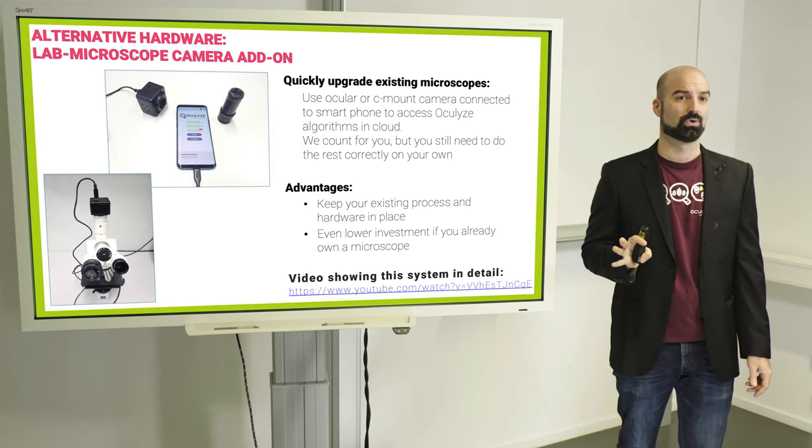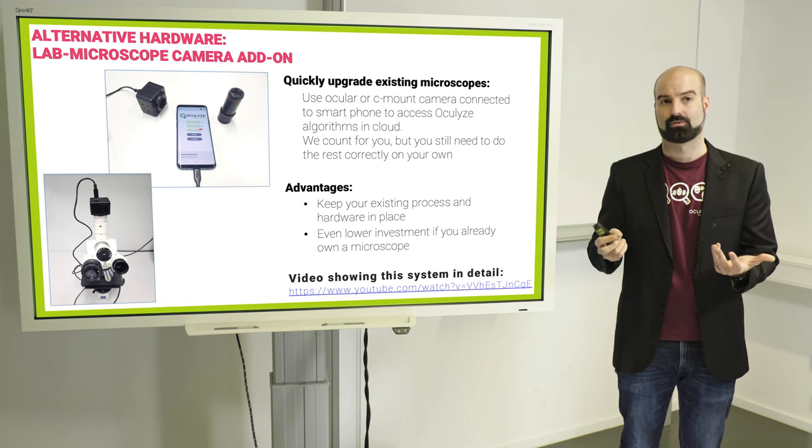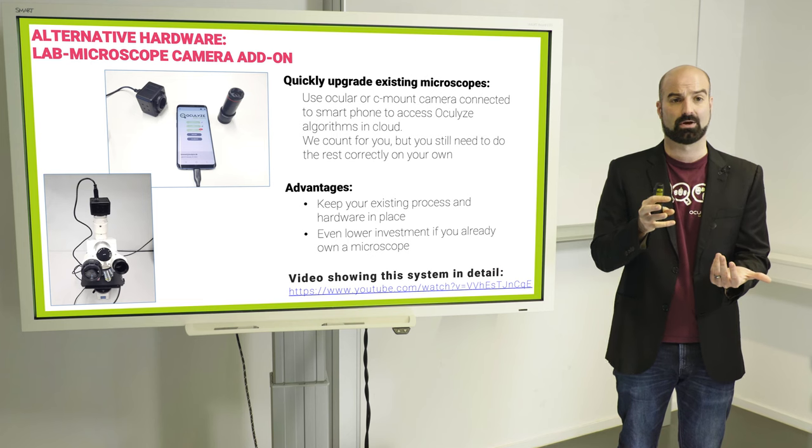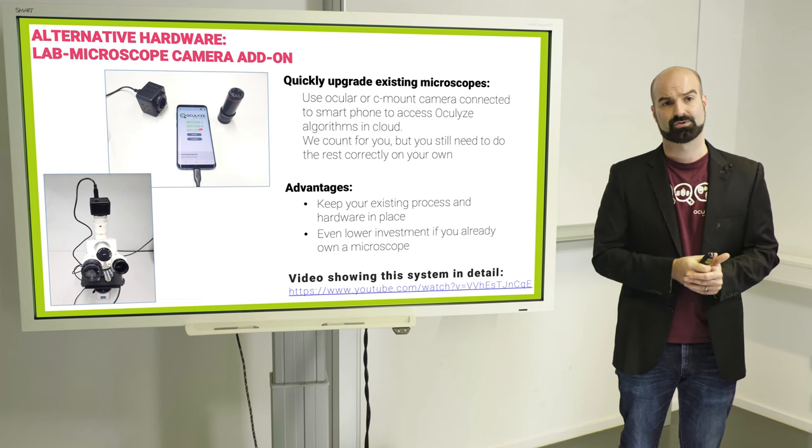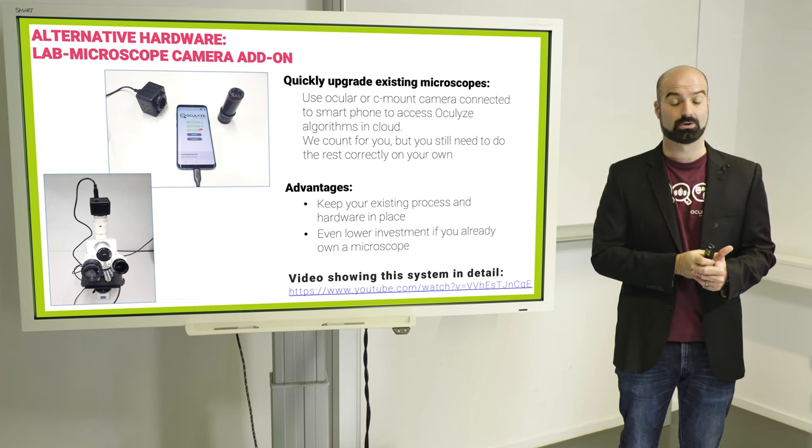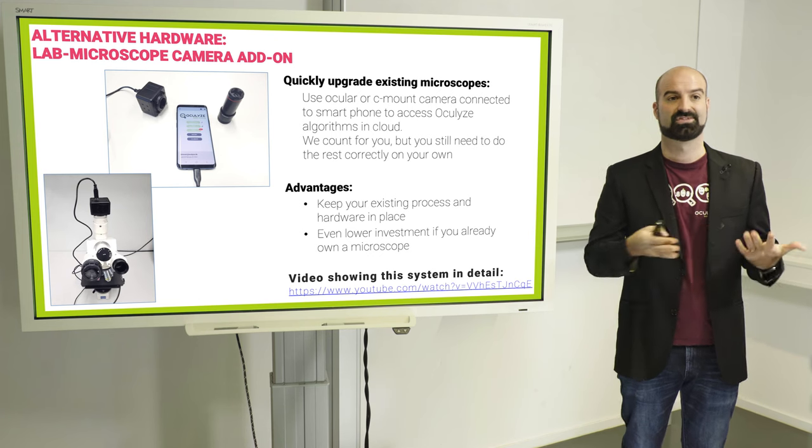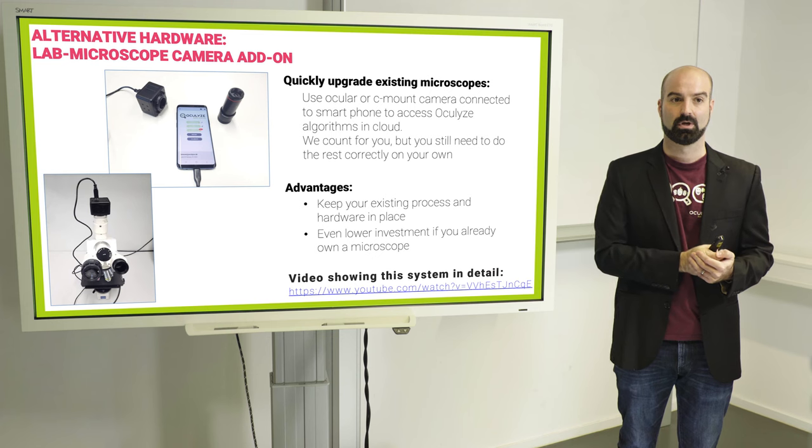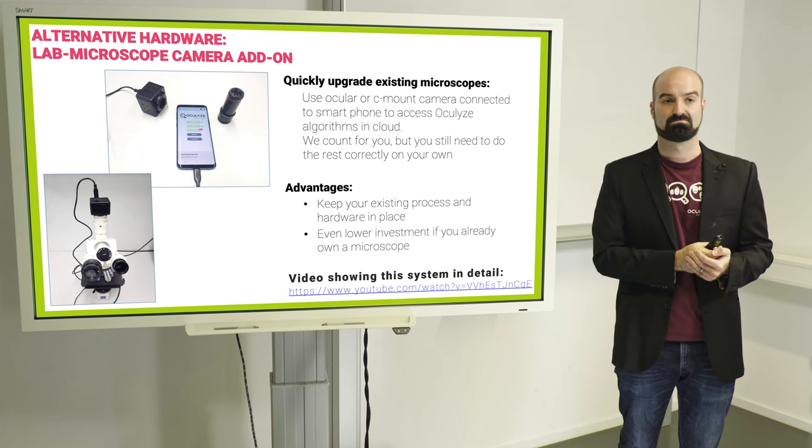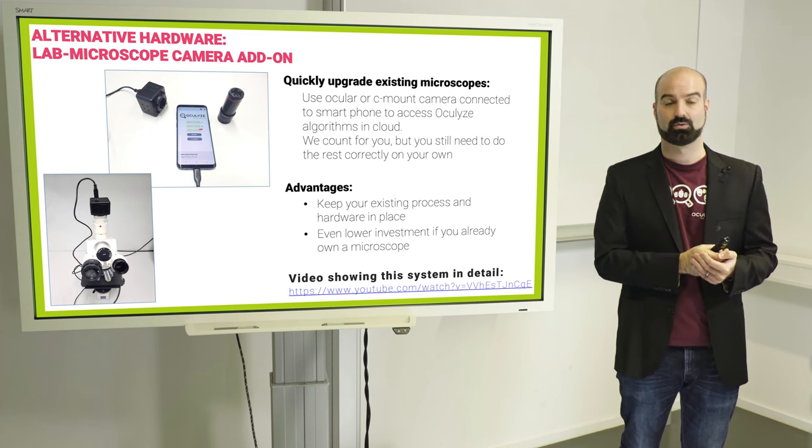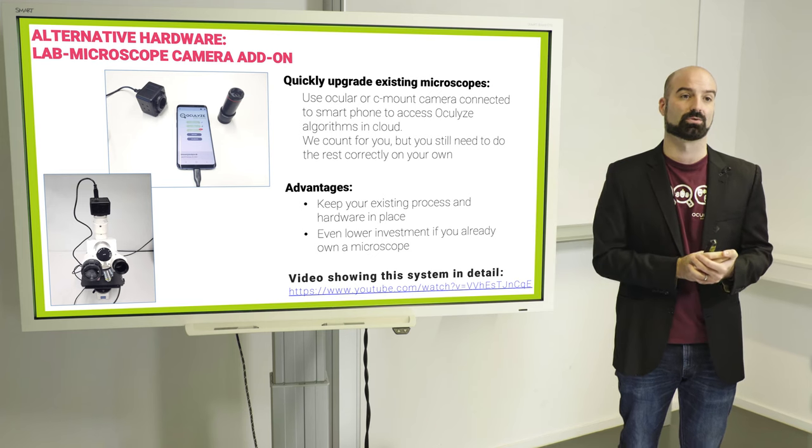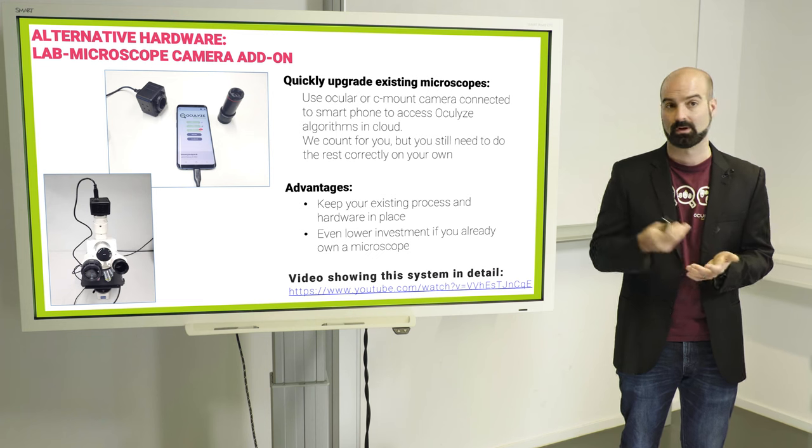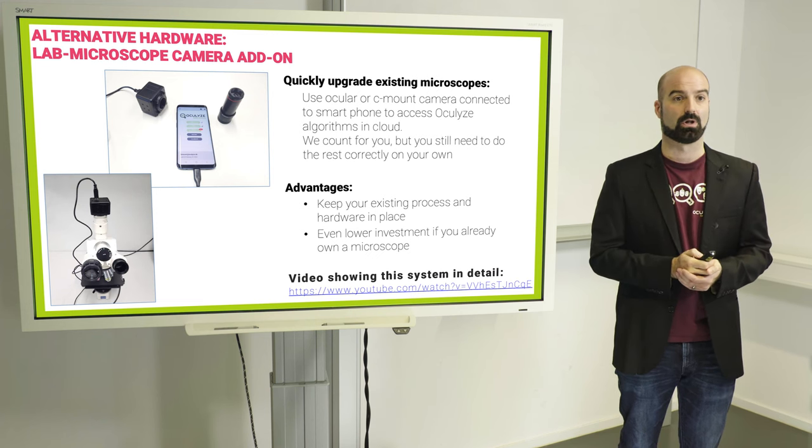As an alternative you can also use an add-on for a laboratory microscope. So you can retrofit the microscope you might already have. This is especially interesting for larger breweries who have a very set in stone process. And they want to change their process as little as possible. In general I would say our microscope is easier to use. But it's totally up to you. If you have a microscope and you like your microscope and you like loading the Thoma chamber, because with this you're still using the Thoma chamber, you can use this system as well.